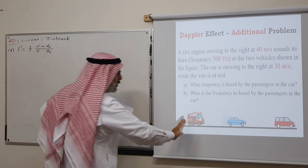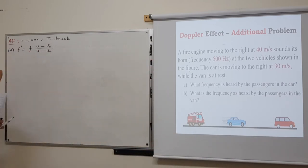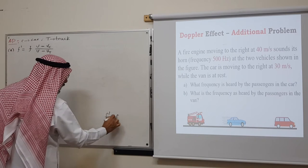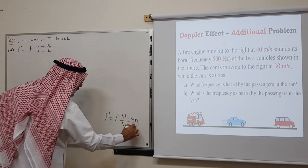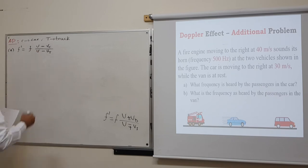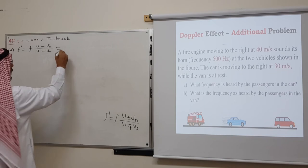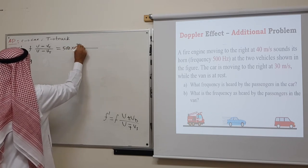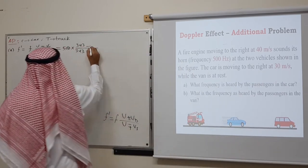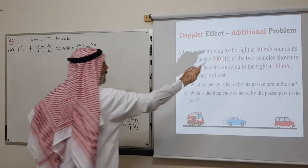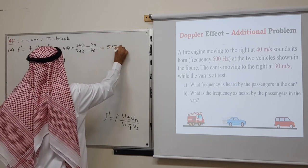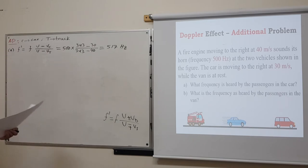Putting in the numbers: f' = 500 × (343 − 30) / (343 − 40) = 517 Hz. That is the frequency heard by the people in the car.